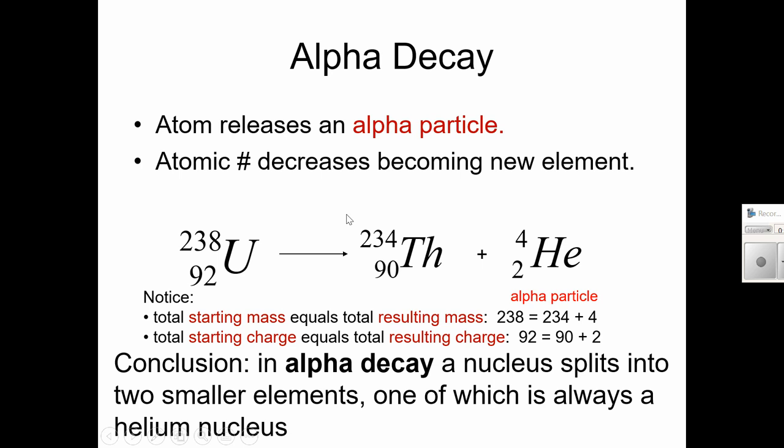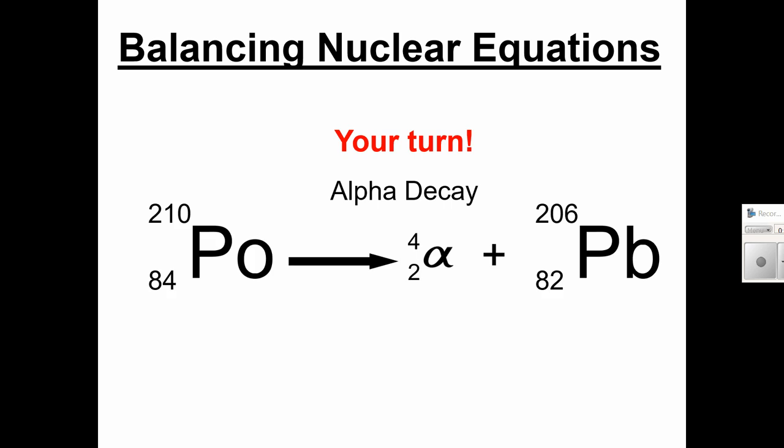So, I wanted to show some nuclear reactions written out. And so, here is a uranium atom. It's got a mass of 238, 92 protons. And if it loses an alpha particle, you can see, you subtract 4, so 238 minus 4 is 234, and you subtract 2 protons, so 92 minus 2 is 90. Okay, so alpha decay is splitting that nucleus into two smaller elements, one of which is always a helium nucleus. So, your turn. Here we've got polonium, 210, 84. Don't look at the right side. See if you can kind of write that out on your own. Pause the video. Do a little bit of practice.